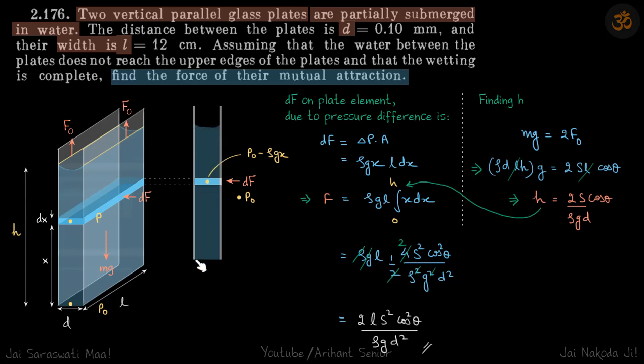So there the pressure will be P naught plus rho gx. Because of the mercury, pressure will be more than the surrounding pressure.